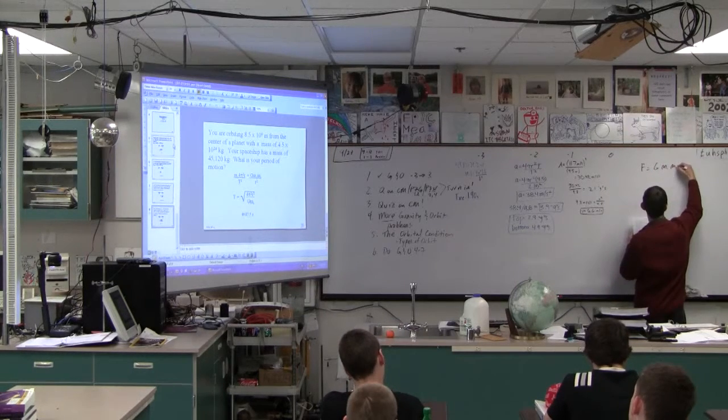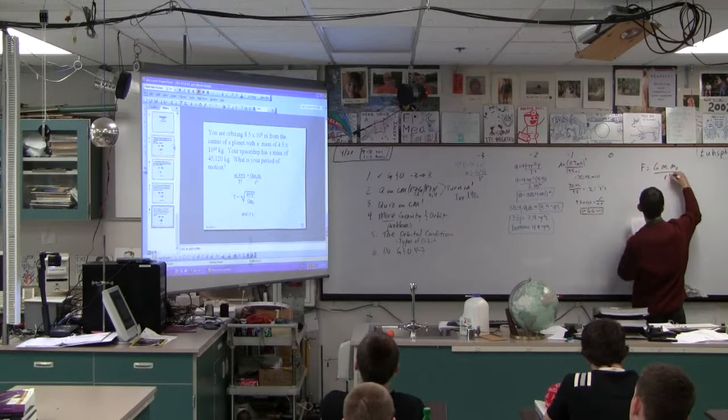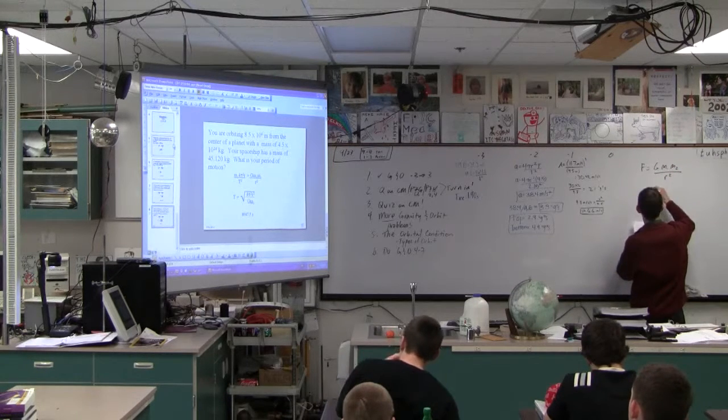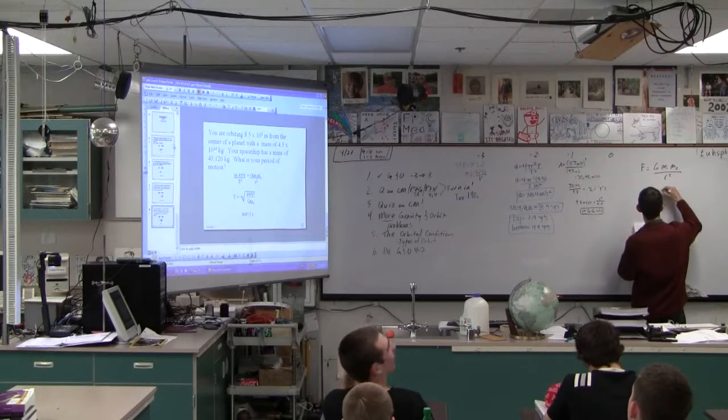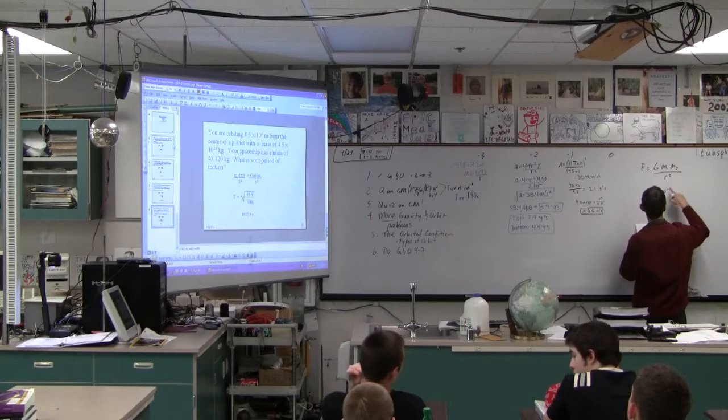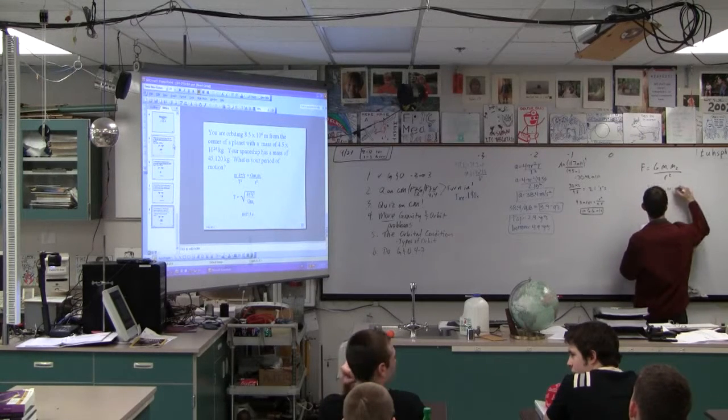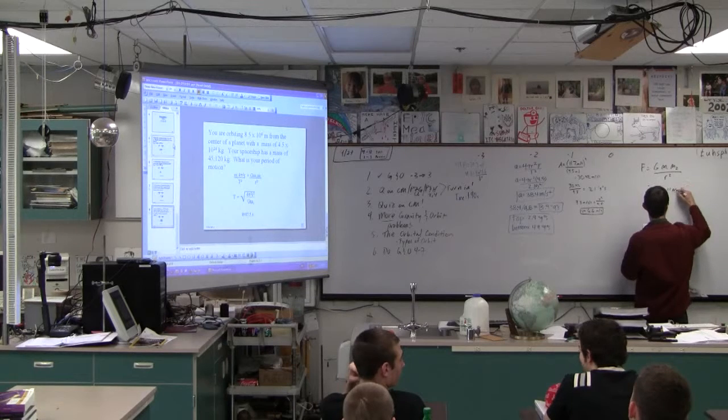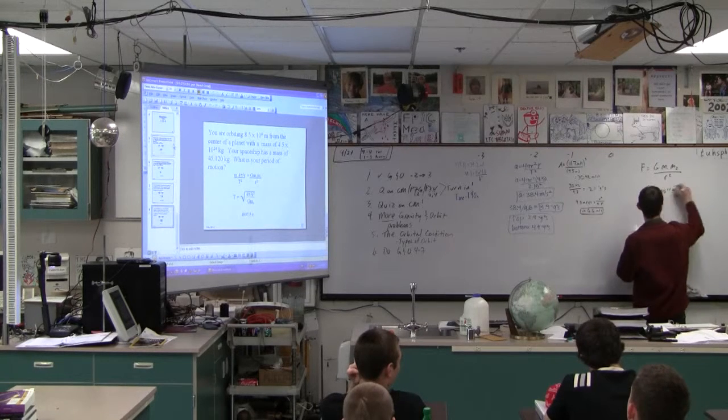Okay, times one mass times the other mass, over R squared. And then we have to figure this out. This is 6.67 times 10 to the minus 11. That might be the distance I didn't give you. And this is Newton meters squared per kilogram squared.